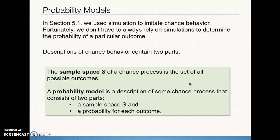A probability model starts with the sample space and assigns a probability to each one of those possible outcomes. Let's pretend the coin we flipped was a trick coin, and the probability of getting heads was 60% and the probability of getting tails was 40%. Together they add to 100%, which is necessary for a probability model to be legitimate. The other requirement is that each probability for the different possible outcomes in the sample space is between 0 and 1.